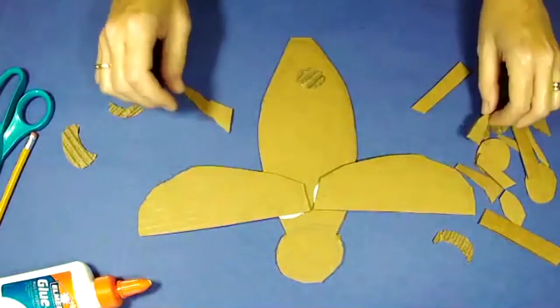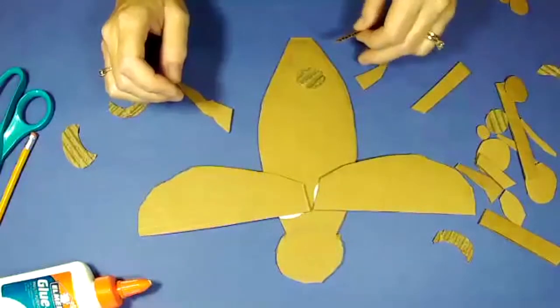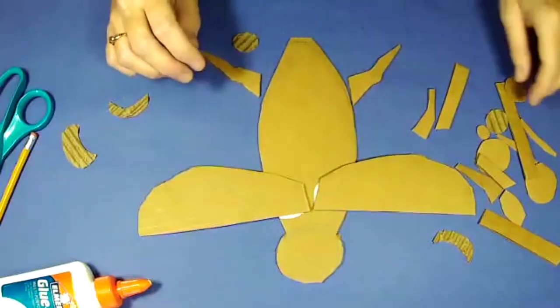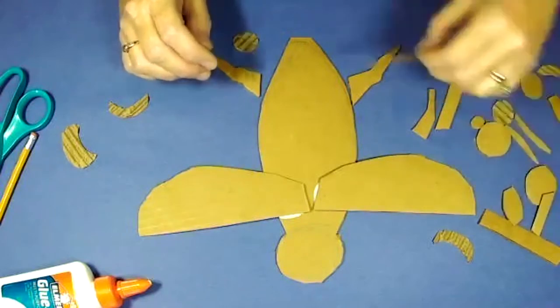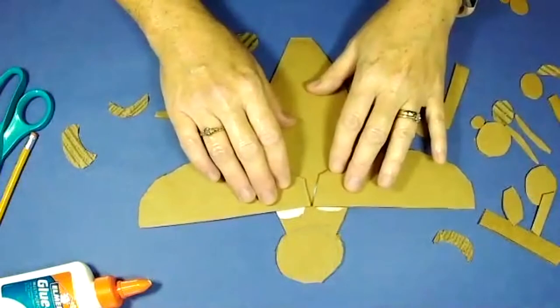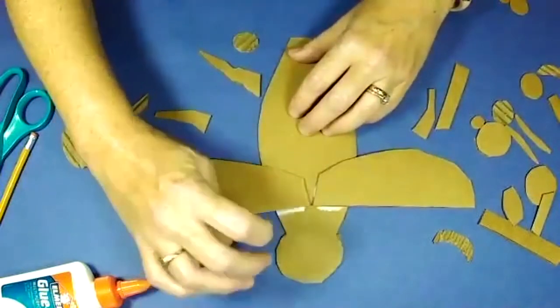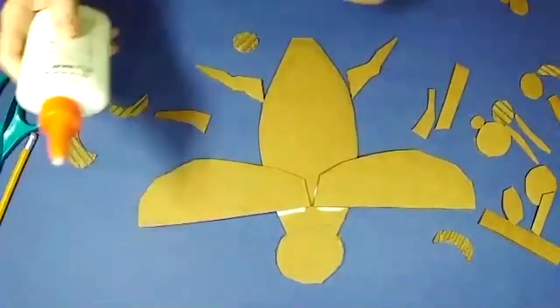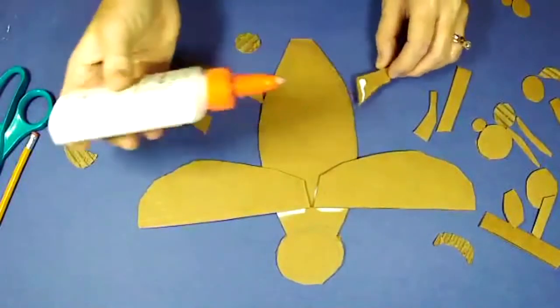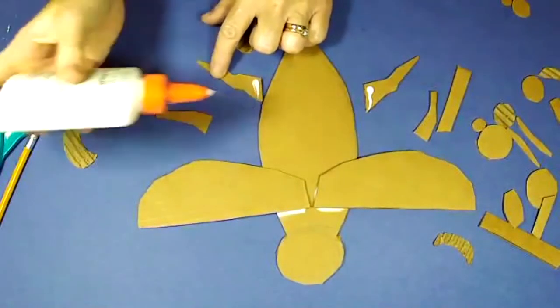Okay, so there are my wings for my bug. I also have legs and I don't have six legs. Did you guys know that insects have six legs? I have four, but we're going to pretend that two of them are hiding underneath the wings so that we don't have to have six.